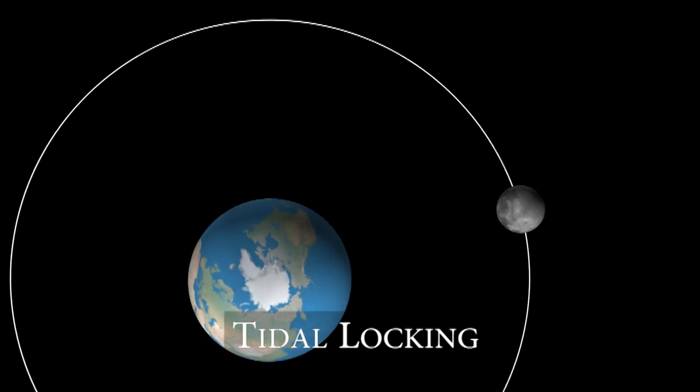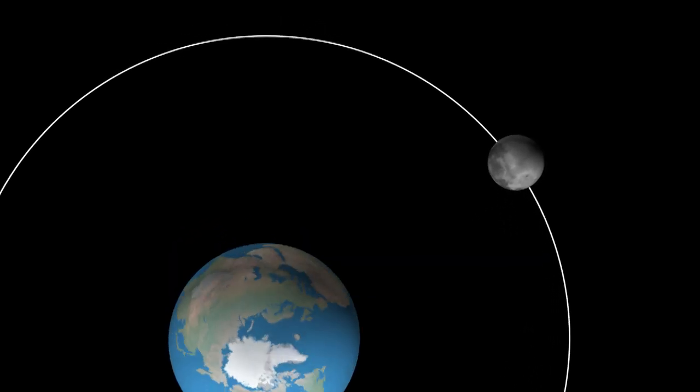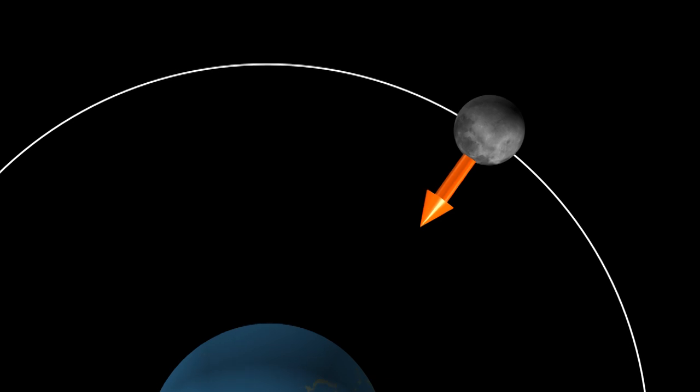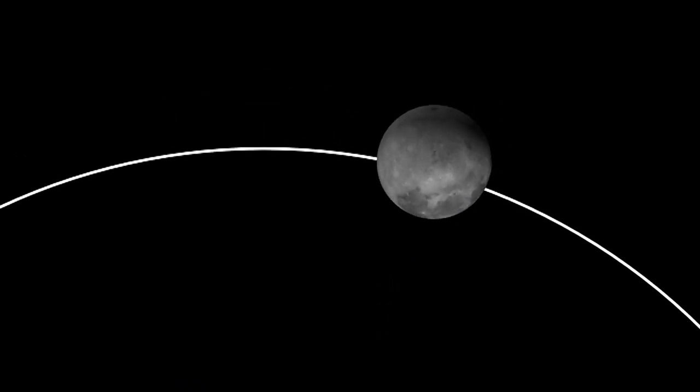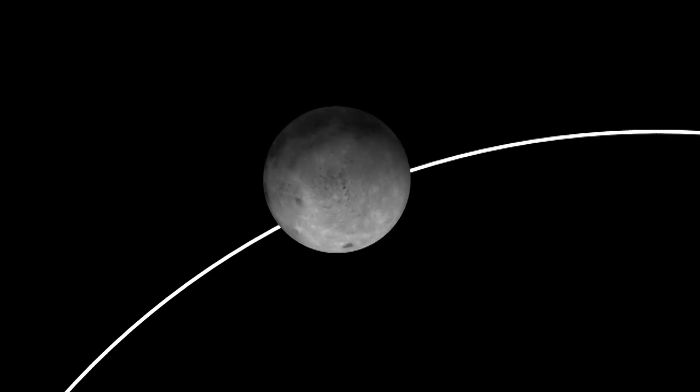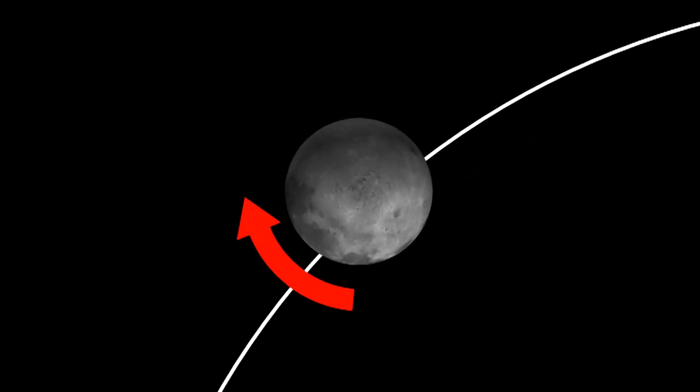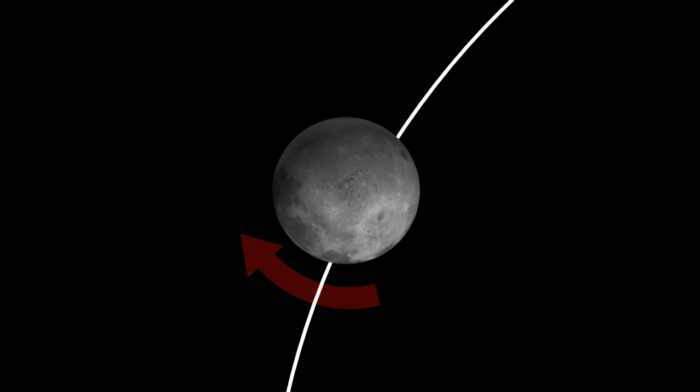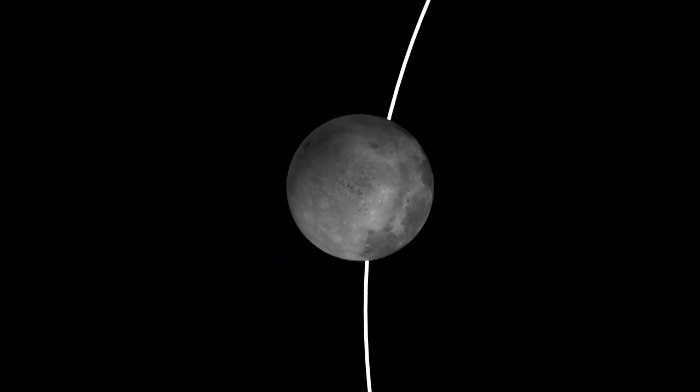Tidal locking has already happened to the moon. It's why we only see one side of the moon. A long, long time ago the moon was probably spinning pretty fast. But tidal forces slowed down the moon's rotation until its rotation speed was the same as its orbiting speed.